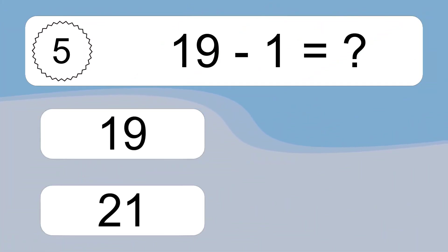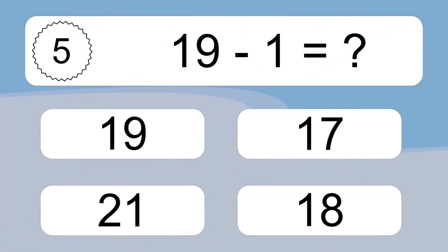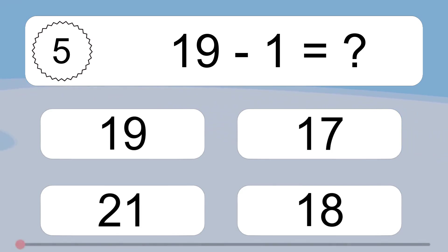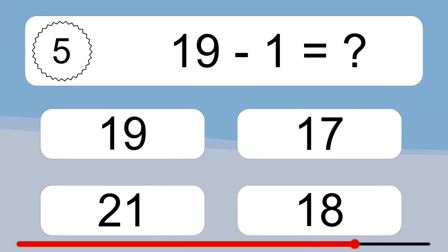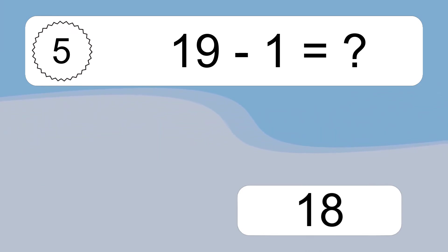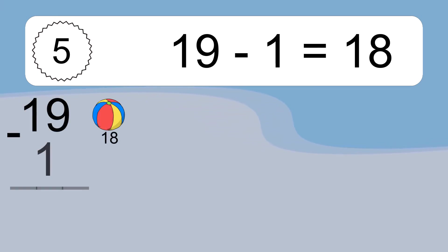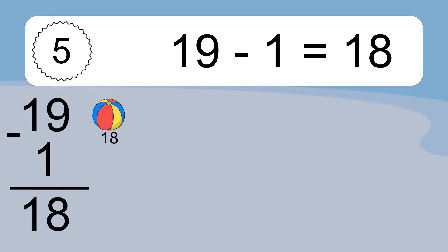19 minus 1 equals what? 19 minus 1 equals 18. Let's count it: 18.